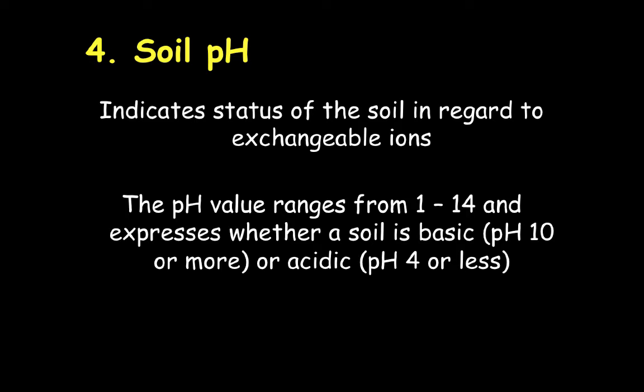Soil pH — I'm sure you've all done a soil pH test at some point during your education. This really indicates the exchangeable ion capacity of the soil, and that becomes very important for a number of reasons. As we get into different soil types across the U.S., specifically our salted soil types, that's going to lend itself to a more basic pH — a higher pH — and that's going to really affect the type of plants that can grow in that soil. As a review: pH ranges from 1 to 14 and is an expression of basic or acidic soils. Basic soils are a pH of 10 or more, and acidic soils are a pH of 4 or less.